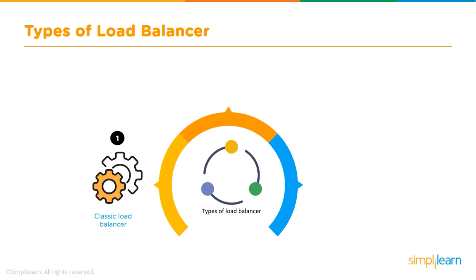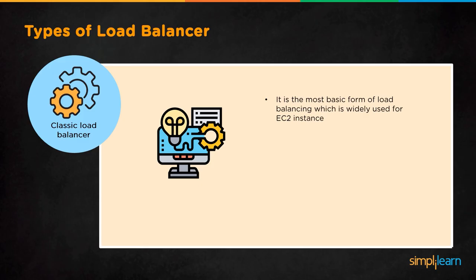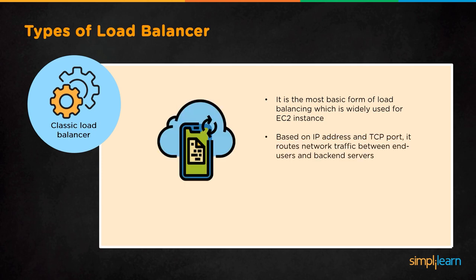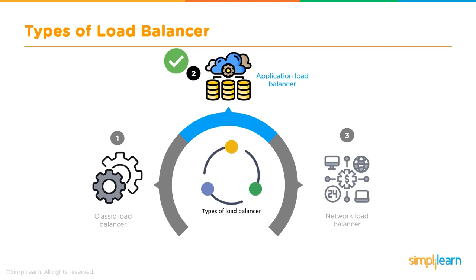There are three types of load balancers on AWS: classic, application, and network. The classic load balancer is the most basic — a primitive load balancer — widely used for EC2 instances. It routes traffic based on IP address and TCP port between end users and backend servers, but does not support host-based routing, resulting in lower resource efficiency.